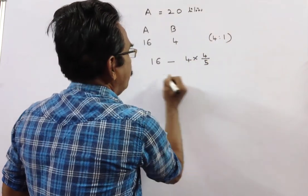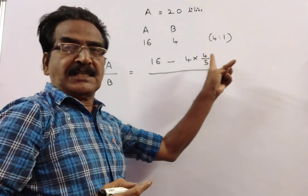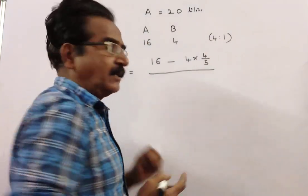4 is to 1 ratio, 4 by 5. This is the position of liquid A after 4 liters of mixture is drawn.